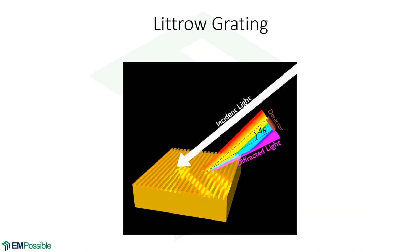Another application is the Littrow configuration: broad white light hits the grating designed so one diffraction order reflects in the exact same direction the light came in. Since the grating disperses the light, detecting only a certain range acts as a filtering operation — removing some colors and passing others. By controlling the detector size or the distance, we can create a mirror that reflects only a very specific color.